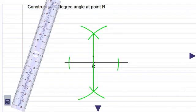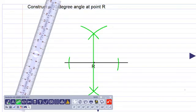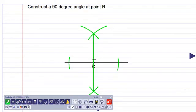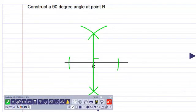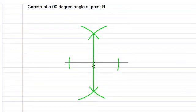We have a 90 degree angle formed over here. We have a 90 degree angle formed here. So we have constructed a 90 degree angle at point R. Thanks for watching and keep practicing.